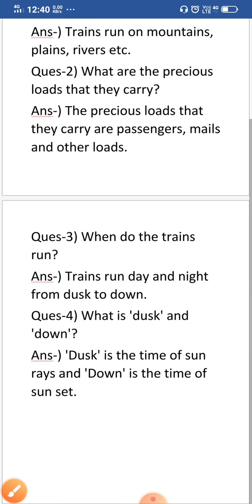Now question number four, so your fourth question is what is dusk and down? So the answer is dusk is the time of sunrise and down is the time of sunset. So the dusk is the time of sunrise and down is the time of sunset.